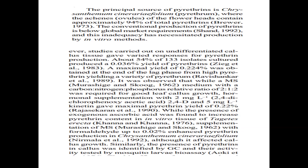They check each phase to measure the yield, since most secondary metabolites are produced only during the stationary phase. They used MS medium with a carbon:nitrogen:phosphorus ratio of 2:1:2, which is the best macronutrient ratio for good callus yield. They also found that exogenous ascorbic acid increased the pyrethrin content in in vitro tissue of Tagetes erecta.